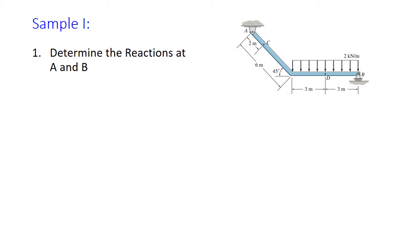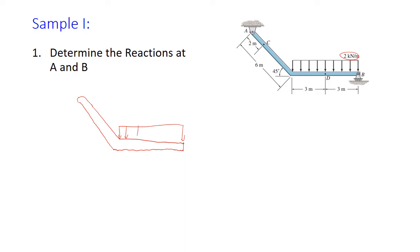As with most static problems, what we're going to do is draw a free body diagram. Our free body diagram is a body that's free from its surroundings, and so here's our body free of its surroundings. Then we start to apply our forces. We have our active loads and we have our distributed load — this two kilonewton per meter load on the horizontal portion — and so we'll include that right here, with units.